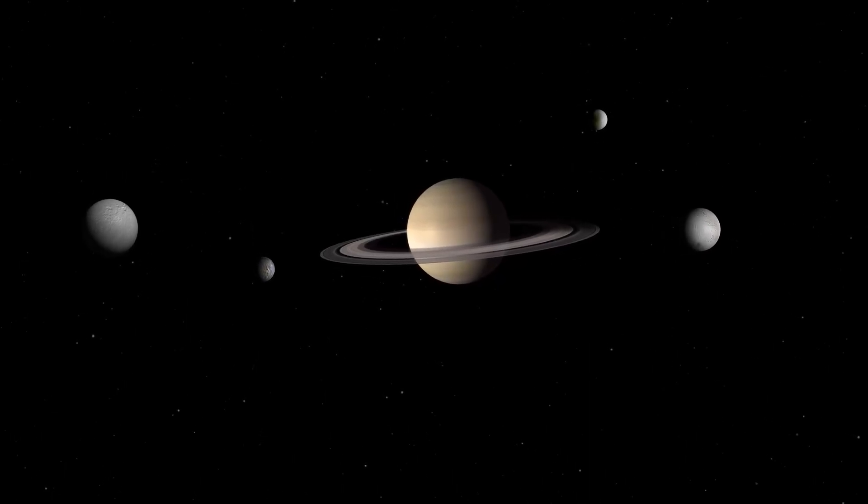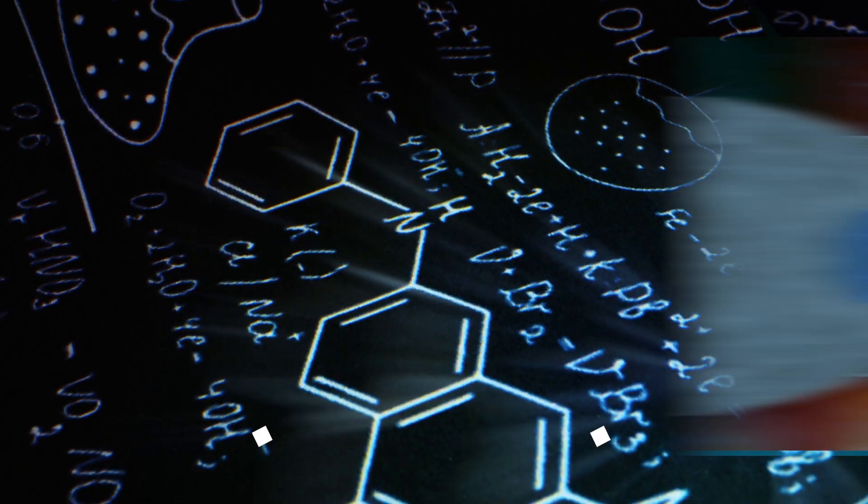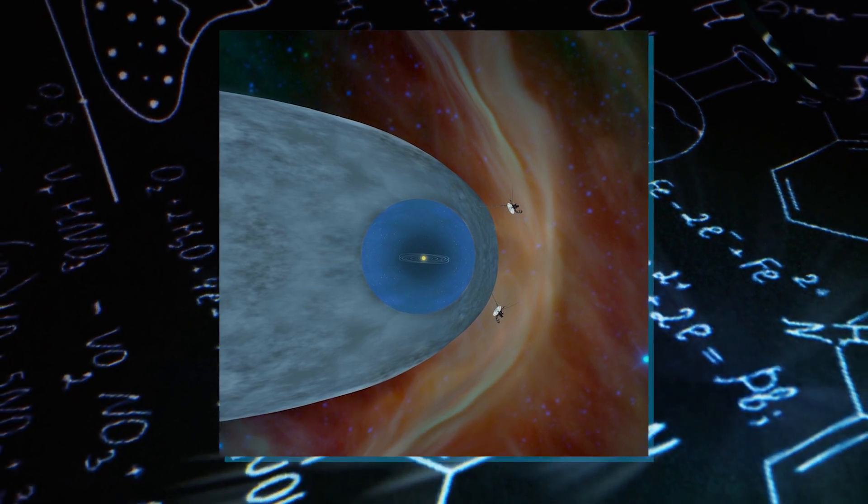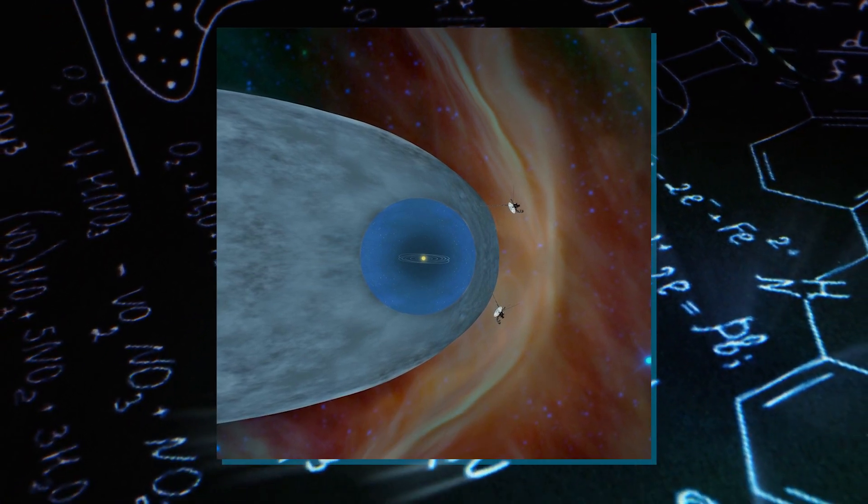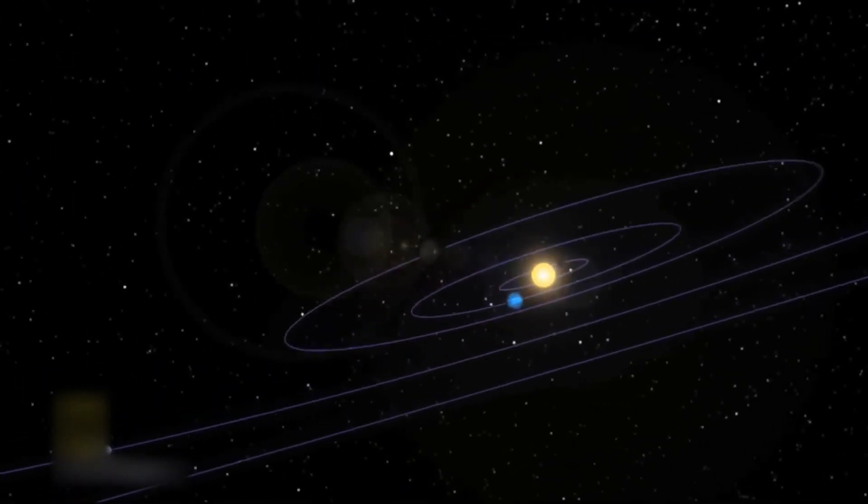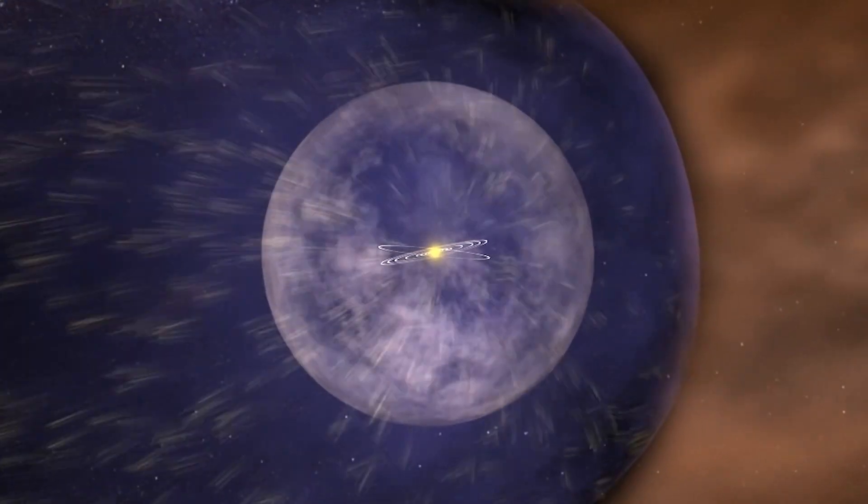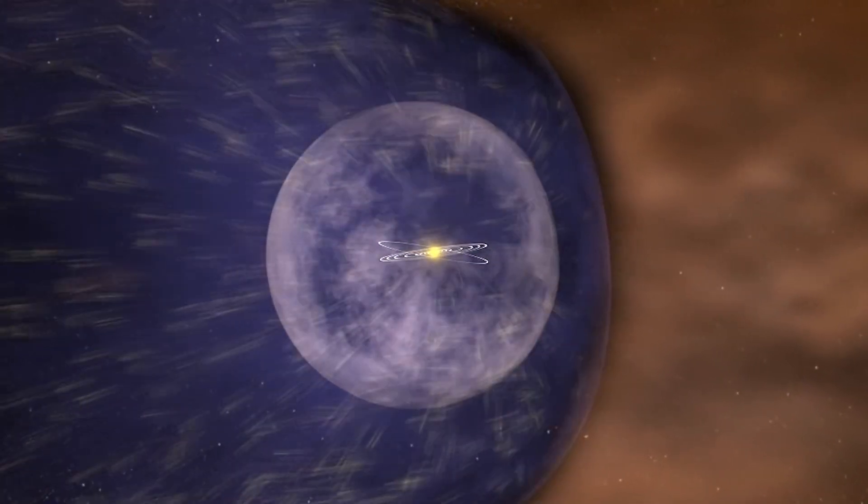Voyager 1's remarkable feat in discovering the heliopause significantly contributed to our understanding of the boundary that separates our solar system from interstellar space. The heliopause is the region where the solar wind from the sun's influence diminishes, marking the outer edge of the heliosphere.